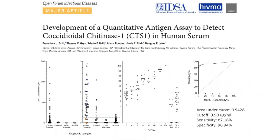We recently published a paper on this assay describing its utility in detection of valley fever in human serum. As you can see from the graphs at the bottom, there's a huge range of detectable CTS1 in human serum. More importantly, our assay appears to be both sensitive and specific, so it has huge diagnostic potential. There is no one test to diagnose valley fever definitively that's both sensitive and specific, but the test we developed appears to have this potential, so it's very important that this research continues.